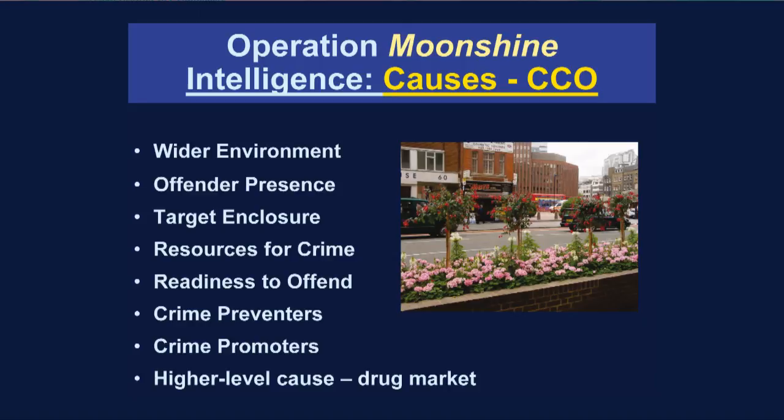We then started thinking about the causes of the problem under the conjunction of criminal opportunity headings. The shopping centre was a big crime attractor — places to get drinks, places to hang around. There were loads of kids in the area, bored and ready to offend. Their parents were handing them money and saying 'don't bother us,' so the parents were acting as crime promoters when they should have been preventers. There was also inadequate staffing of local shops and an emerging drug market establishing itself.